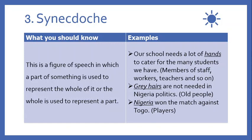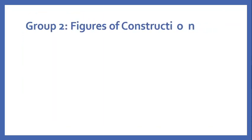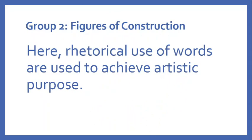'The hands that took my pen must surely return it' — hands represent a person, not literally hands. This is synecdoche: using a part to represent a whole or a whole to represent a part. We now switch to Group Two: figures of construction. Figures of construction are used to show rhetorical use of words to achieve artistic or literary purposes. There are many figures in this category and we will look at the most common ones.